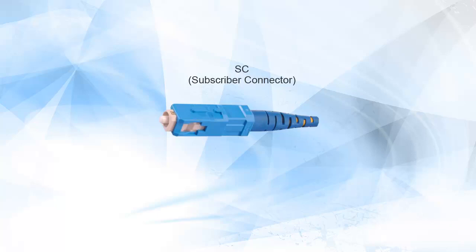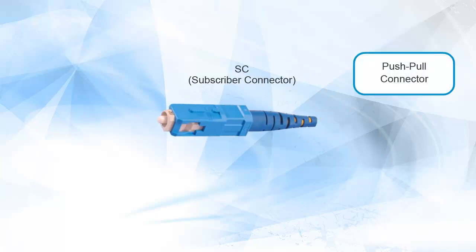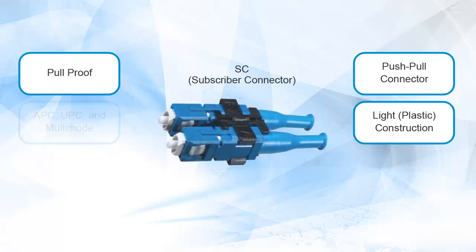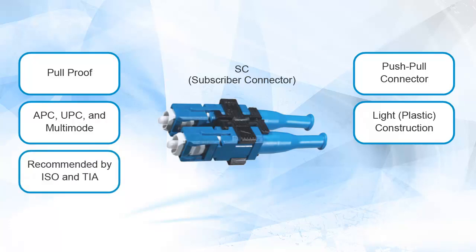SC subscriber connector connectors are a push-pull design, again with a ceramic ferrule, and are about the same size as an ST, but lighter due to their plastic construction. They are sturdy, easy to handle, pull-proof when used with cordage, and can be yoked together into a convenient duplex assembly. Like the FC, they are keyed connectors and are recommended by ISO and TIA standards in respect of design and administration.